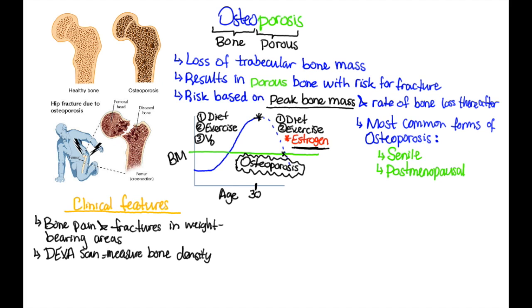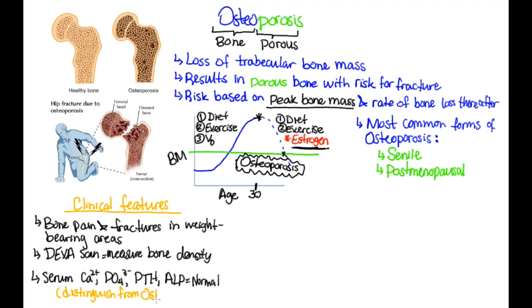Another important clinical feature of osteoporosis is that all the labs are normal. This is important because having normal labs helps you distinguish this disease from osteomalacia, which can present in a very similar way but would be due to vitamin D deficiency.